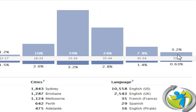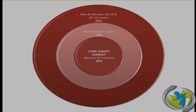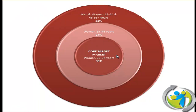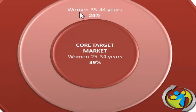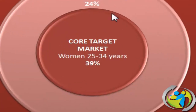Let's take a quick look at how that would look in the target. We have our core target market of women aged 25 to 34 years, being 39% of our visitors to our Facebook page. This is who our page is targeting. If this is not who your business is after, you are giving the wrong message and targeting the wrong people. You need to change your message to your market.